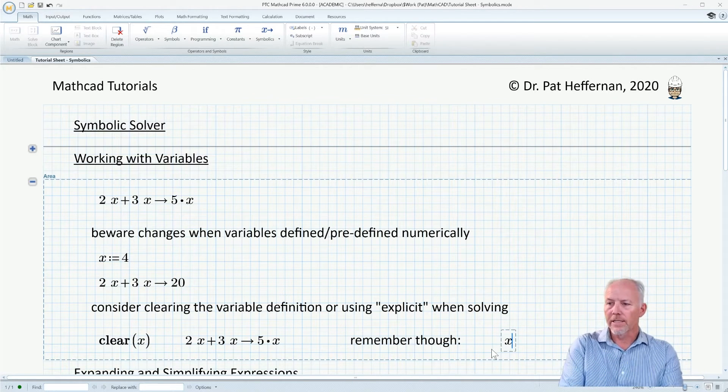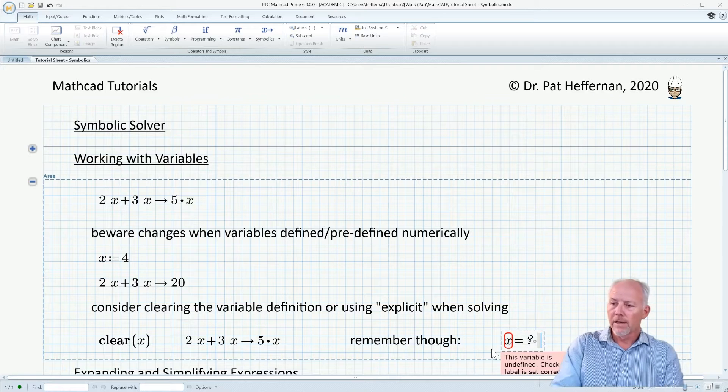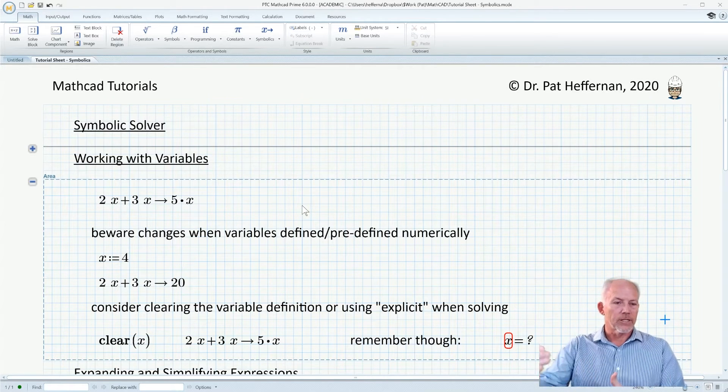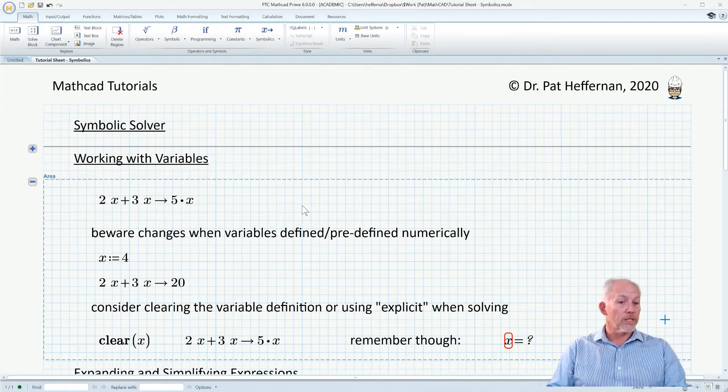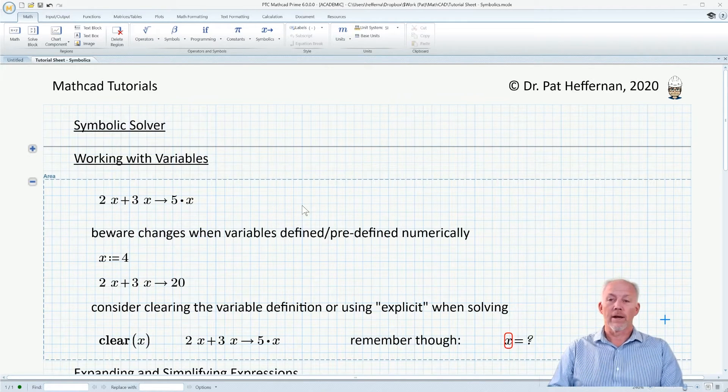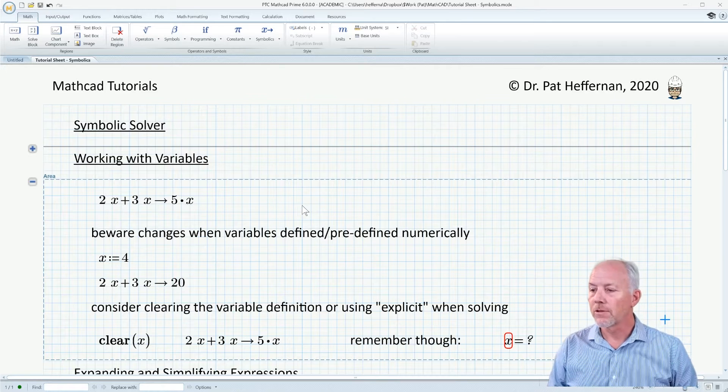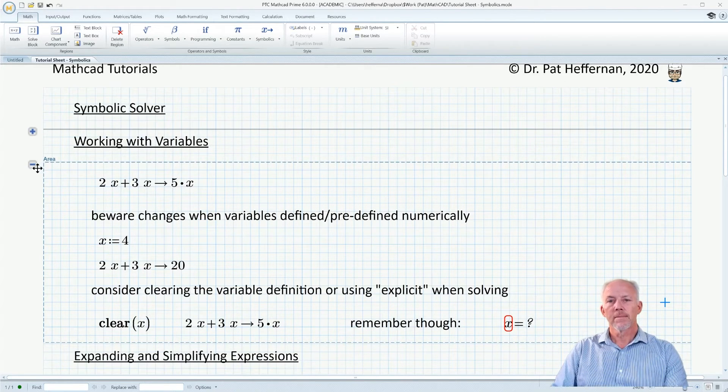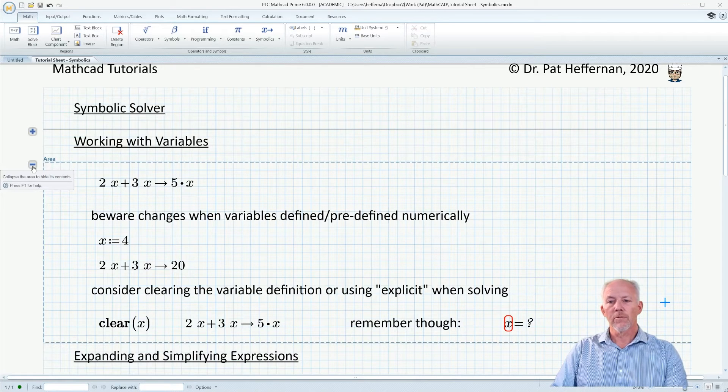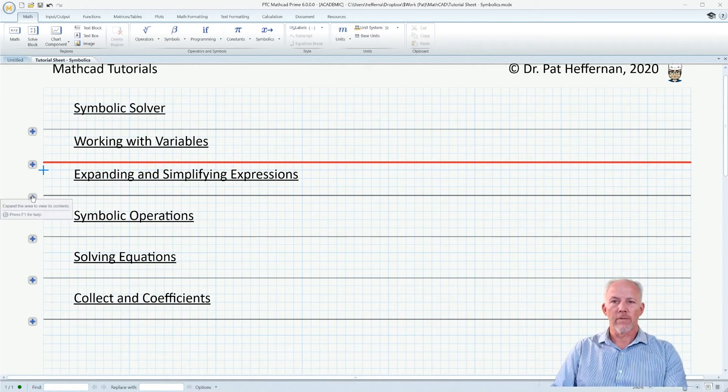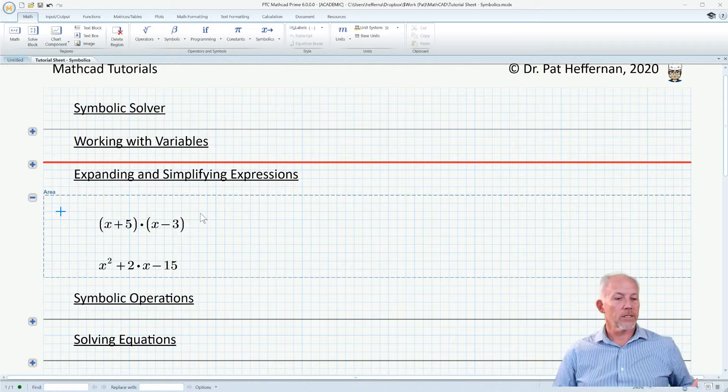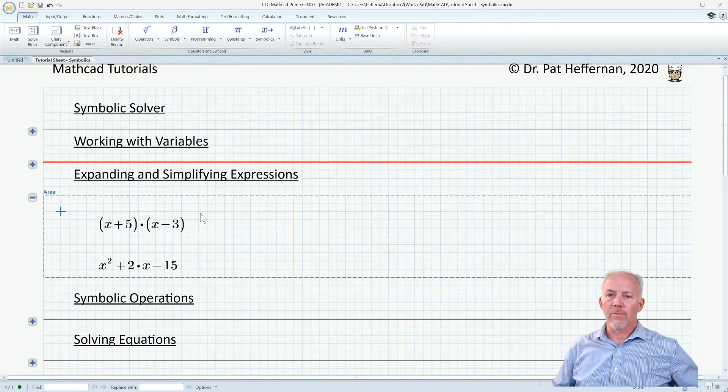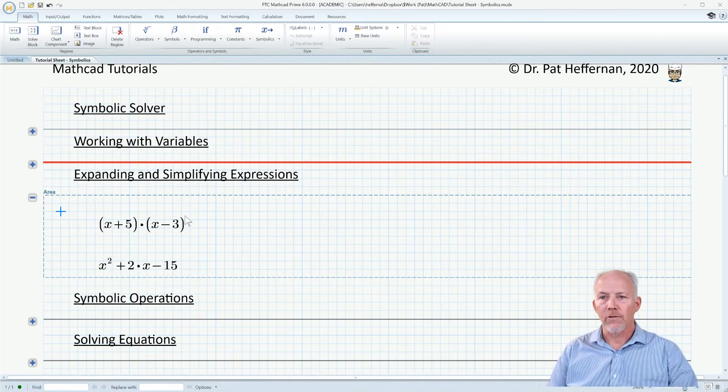If we go and clear x, that is getting rid of the previous definition. Now when we engage the symbolic solver, it once more is able to resolve it symbolically. The caution is that if you were relying on the value of x from previous calculations, it's no longer available, because you've gotten rid of that awareness that the program has to the value of x.